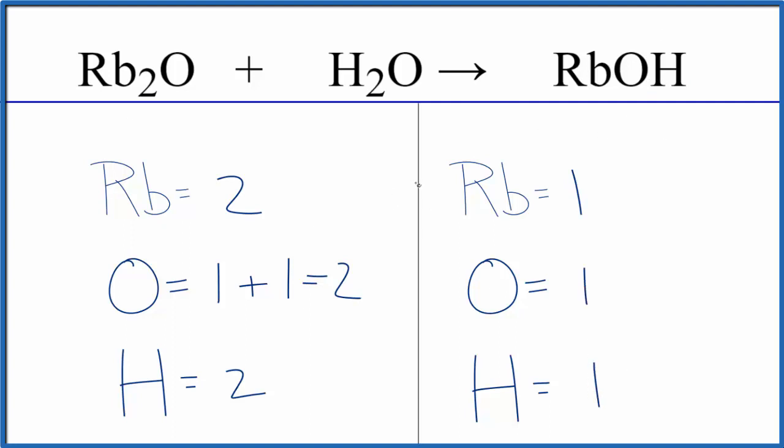It looks like we just need to double all of these numbers here. One goes to two, one oxygen goes to two, one to two. So if we could just double all of these, we'd be done. To do that, we'll put a coefficient of two in front of the rubidium hydroxide.